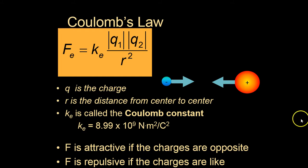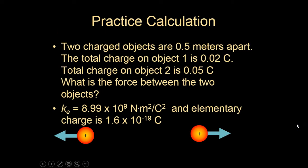So let's go on to our first sample problem. We have two charged particles half a meter apart. One is 0.02 coulombs. The other object is 0.05 coulombs. What is the force between them? Note that this is a huge amount of charge.